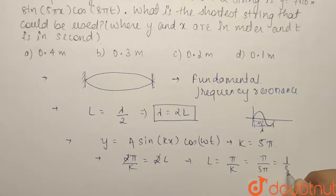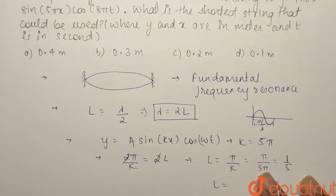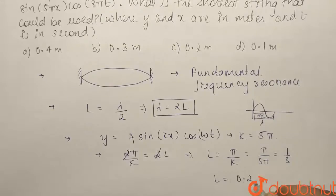So it comes out to be 1/5. The length L equals 1/5, which is 0.2 meters.